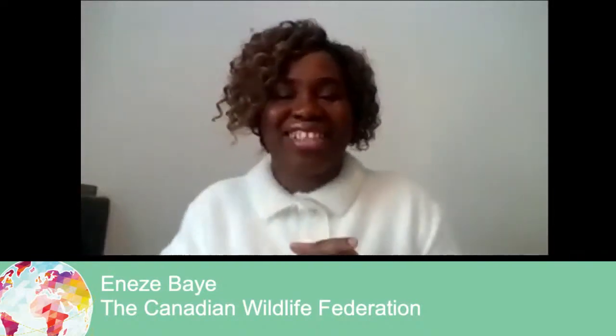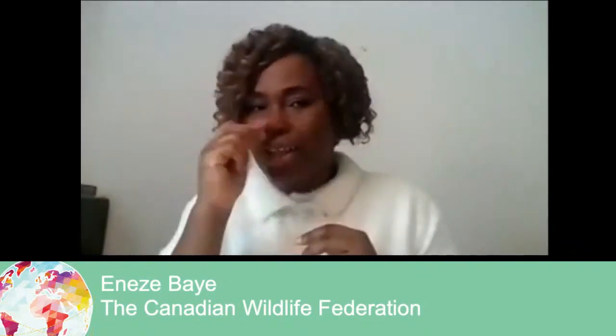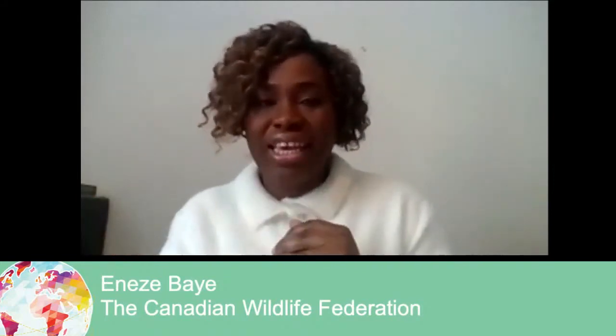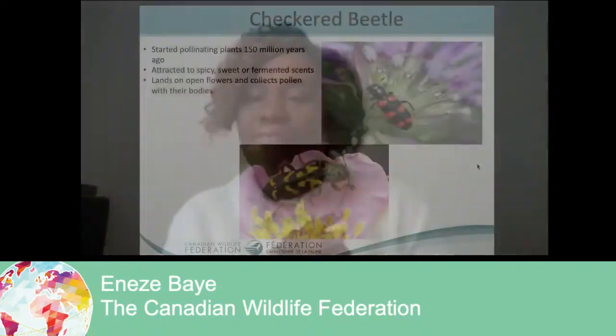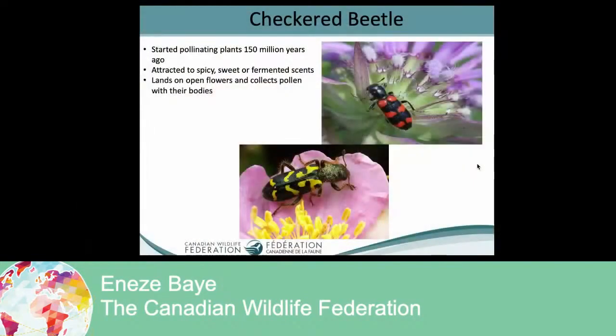The next pollinator is the beetle. Beetle is another pollinator in Canada. They love spicy, sweet, and fermented scents. So if you have flowers in your schools that are spicy or sweet, beetles would really love to go there.